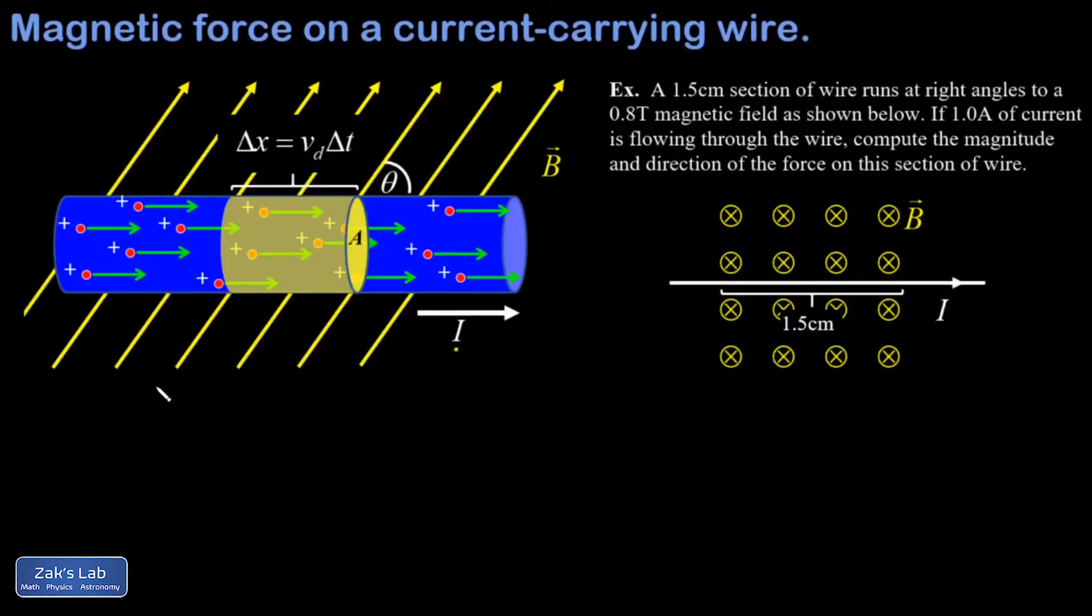In this video, we quickly derive the expression for the force on a current-carrying wire in a magnetic field, and then we apply the new formula to an example. So in the picture on the left, we're looking at a current-carrying wire in a magnetic field, and there's an angle of theta between the direction of current and the direction of the field.